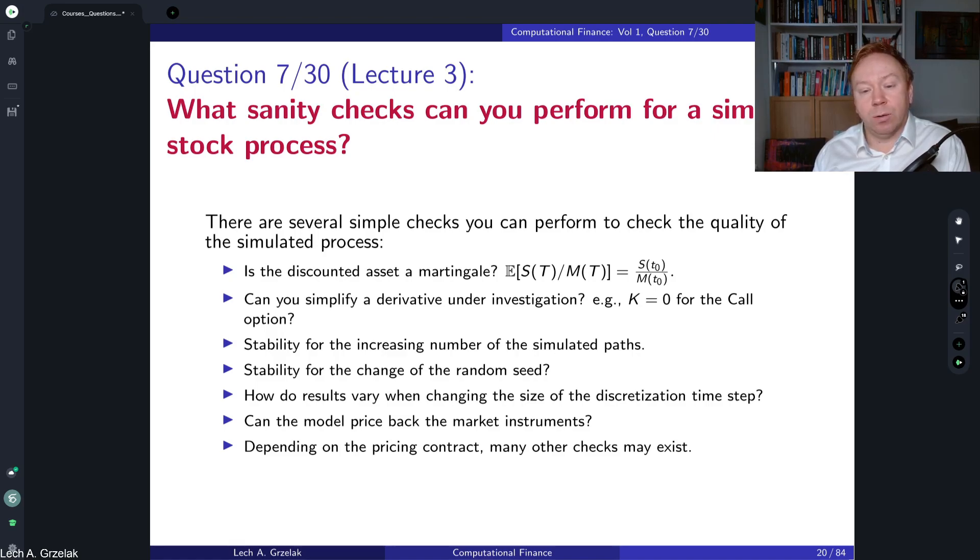So here we will simulate our stock until the maturity. If we have paths, basically you would take all those paths at the expiry date, this will be a distribution, then you discount to today and this has to be equal to the initial value of your stock. And of course in reality this would not be equal, it will be slightly some difference.